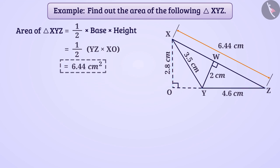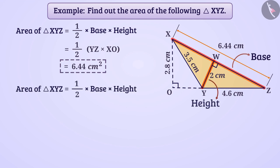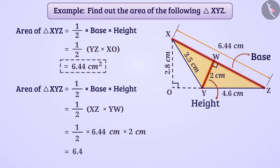We can solve it in another way also. In triangle XYZ, line segment YW is perpendicular on side XZ. If we consider side XZ as the base and perpendicular YW as the height, then the area of triangle XYZ will be half of XZ multiplied by YW — which also gives the area of triangle XYZ as 6.44 cm².